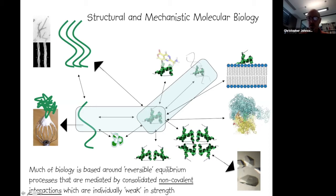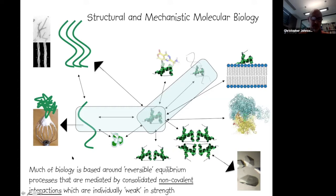We may also be interested in how proteins form large macromolecular complexes, very ordered arrays for crystallography, or how they undergo polymerization and association to form extended macromolecular polymers such as amyloid. The important take-home message is that all of this biology is based around a reversible equilibrium process, mediated by predominantly non-covalent interactions which are individually weak but generate unique structures in large numbers.